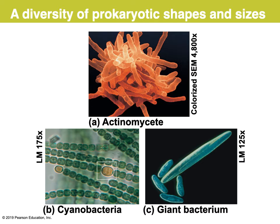There are some odd exceptions — some bacteria that are relatively huge. In the lower right-hand side, you see a light microscope at 125x magnification, and that's a pretty big bacterium. The cyanobacteria on the lower left show cells of somewhat different shapes in a chain. The actinomycetes above are another example of bacteria found in groups. But they're not like a multicellular organism where you have different types of interdependent cells — multiple cells, but not the same as a true multicellular organism.